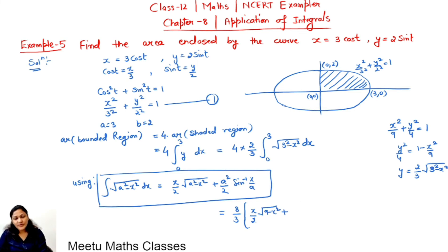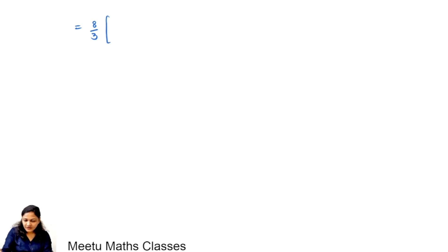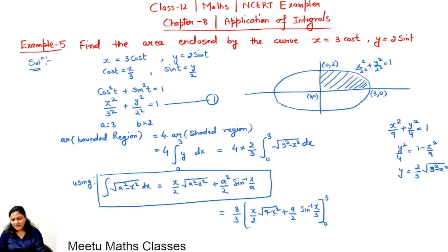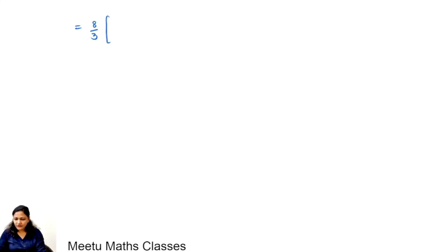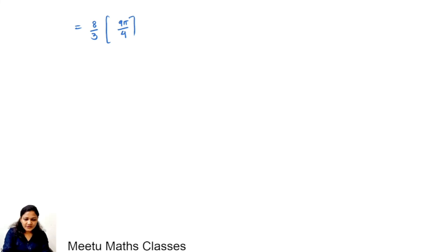By substituting the limits from 0 to 3, at the upper limit x = 3 the square root term becomes 0, and at the lower limit x = 0, sin⁻¹(0) is also 0, so that term vanishes too. Therefore the final answer is 6π square units.